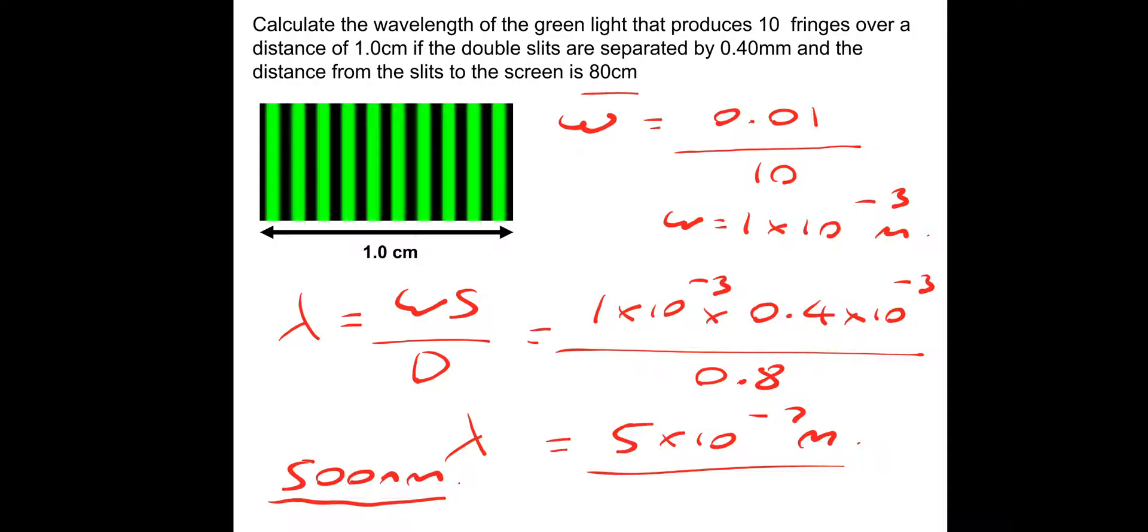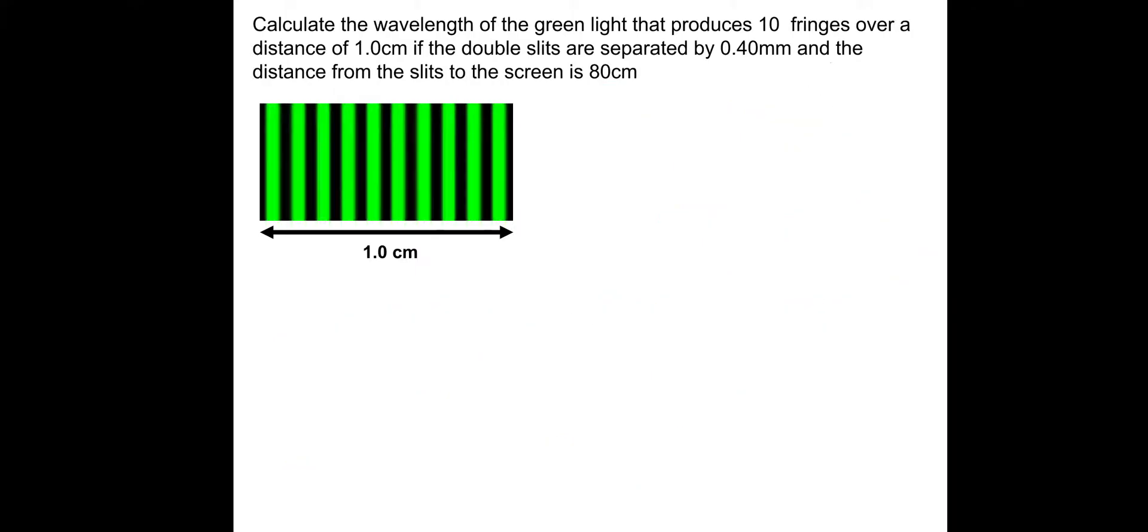Remember, visible light is between 400 to 700 nanometers, so 500 nanometers is green light. Let's talk about the spectrum for a moment. Visible light is between 400 to 700 nanometers. Remember, long wavelengths—this would be the red side, and this would be the blue side. Red is long wavelength, blue's short wavelength. Red's low frequency, blue's high frequency. And remember, they all travel at the same speed, the speed of light.